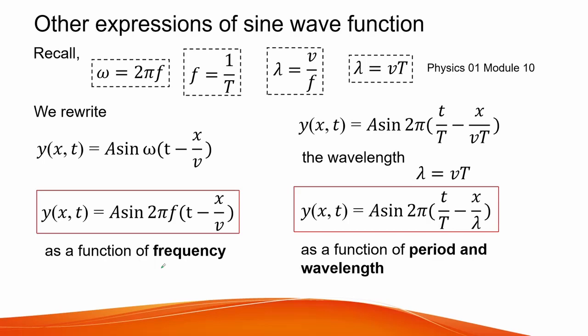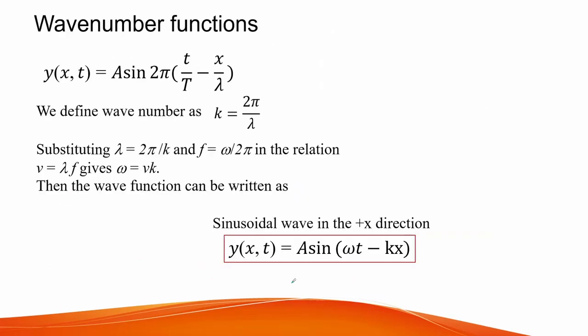Here are some other expressions of sine waves. Recalling previous equations, we can rewrite the wave function in terms of its frequency, or in terms of period and wavelength. We can also write the function using wave numbers. The wave number is equal to 2π divided by lambda, or wavelength.